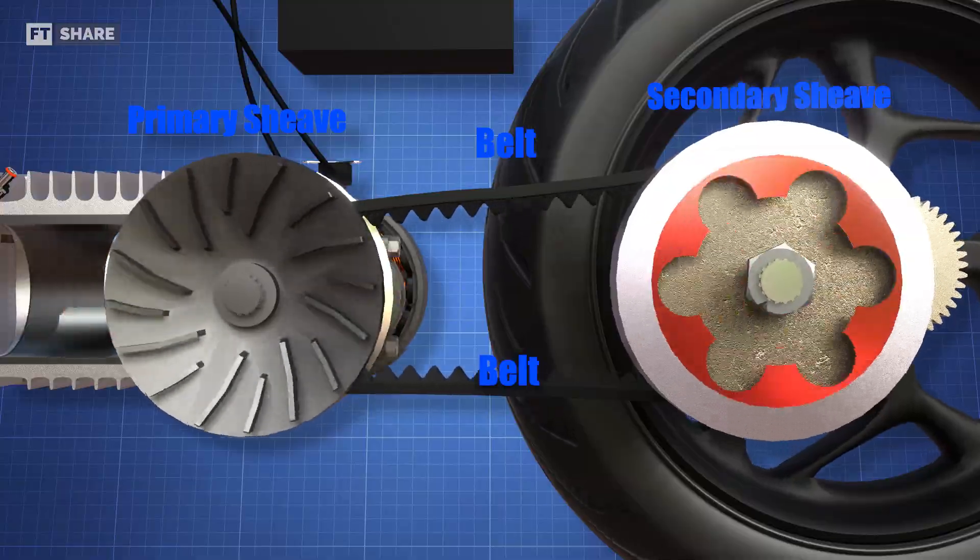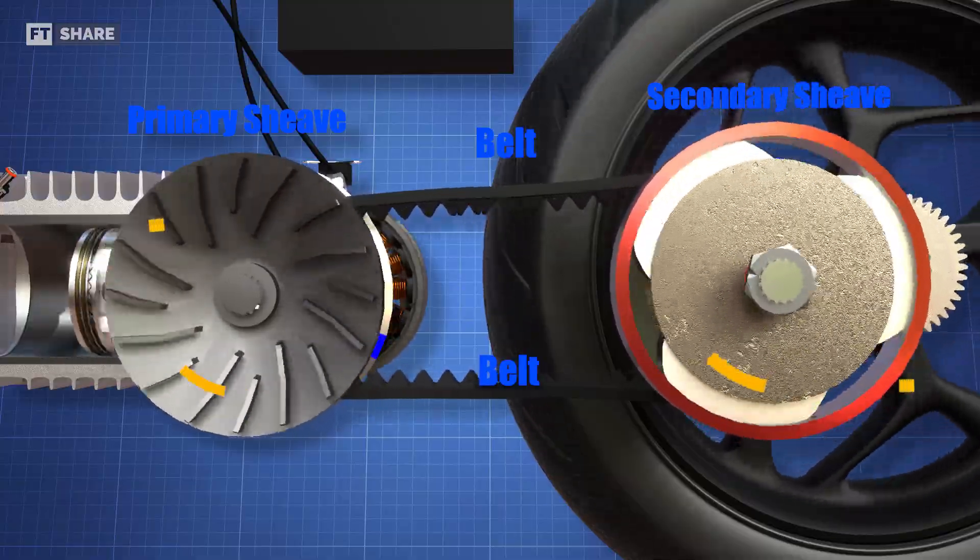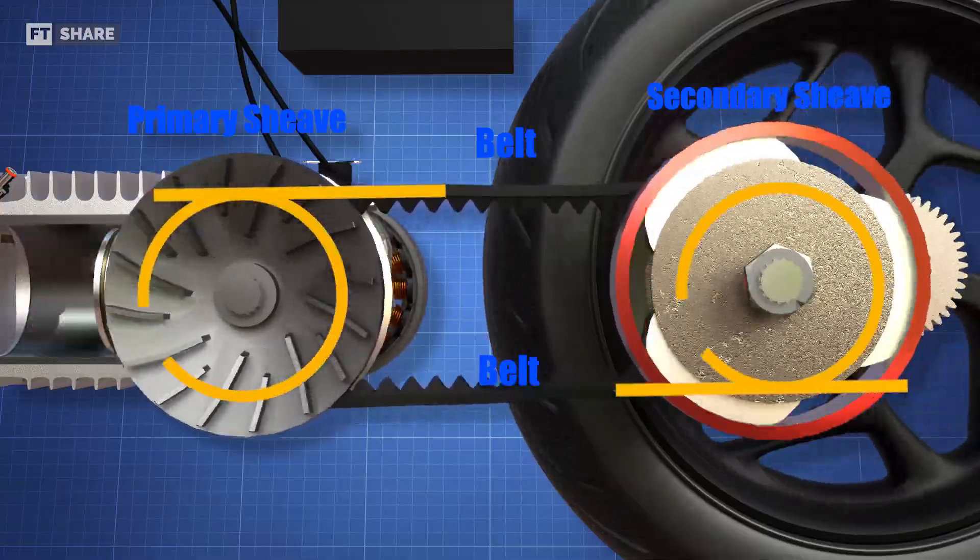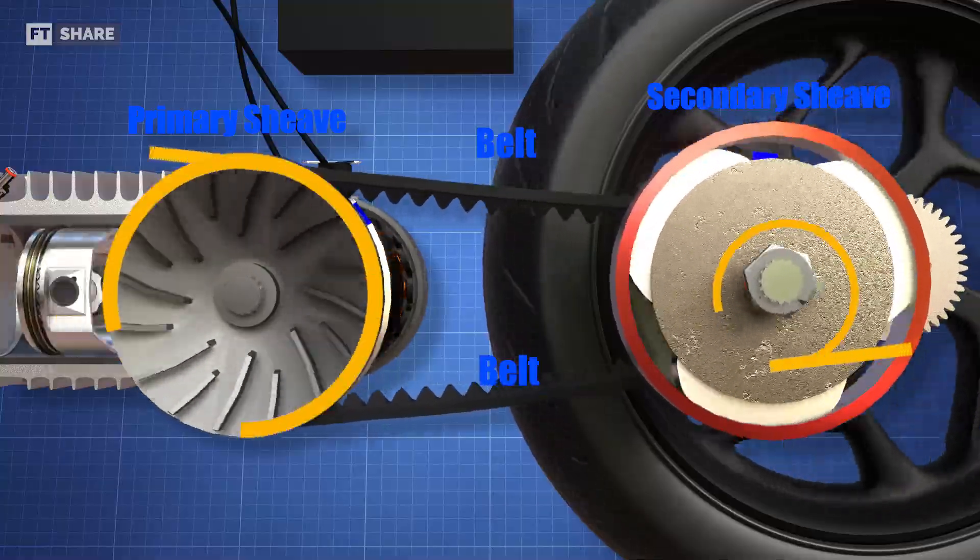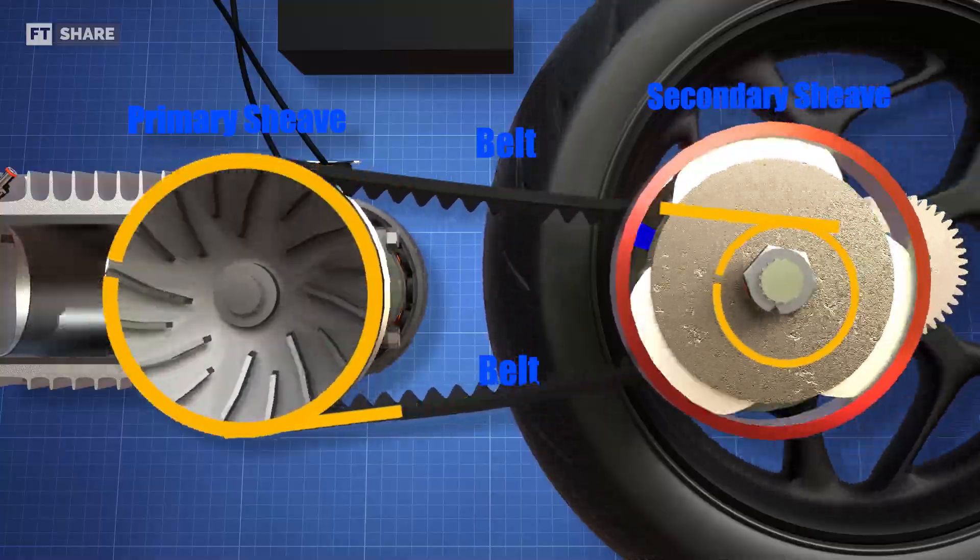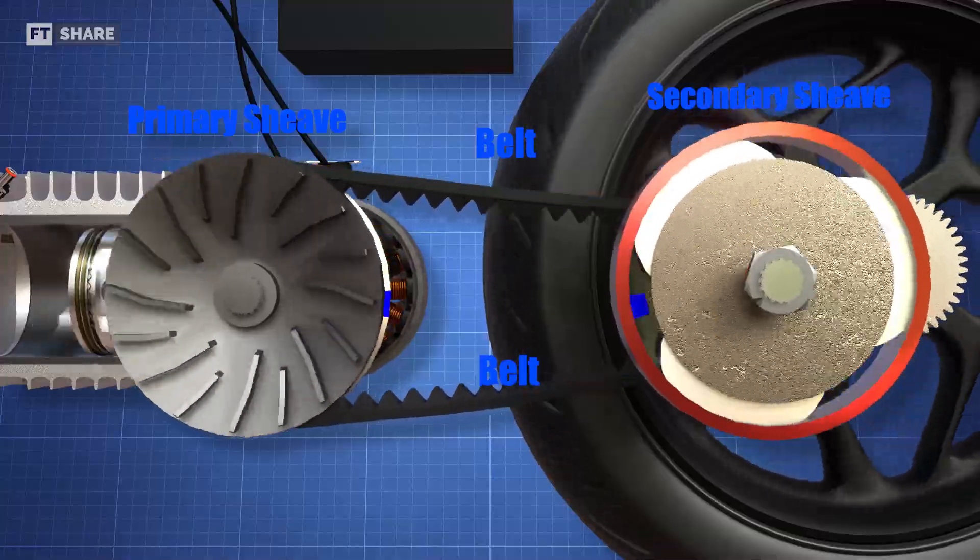Now, in order to achieve higher speed on the wheel side, the diameter of the primary sheave must be made smaller, and the diameter of the driven secondary sheave must be increased. Let's understand how this is accomplished in a real scooter CVT.